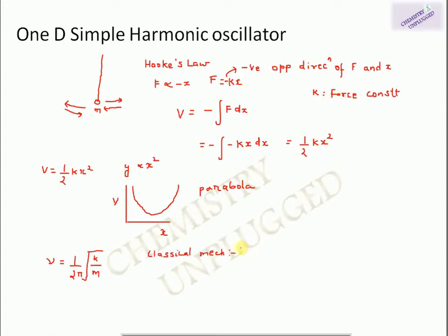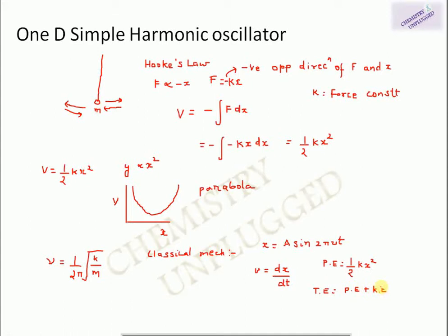According to classical mechanical studies, displacement x is given by x = A sin(2πνt), where ν is frequency of oscillation. From this we can calculate velocity dx/dt. Potential energy is ½kx², and kinetic energy is obtained by differentiating x with respect to t and substituting. The total energy is the sum of potential and kinetic energy, giving a final value of total energy = ½kA².